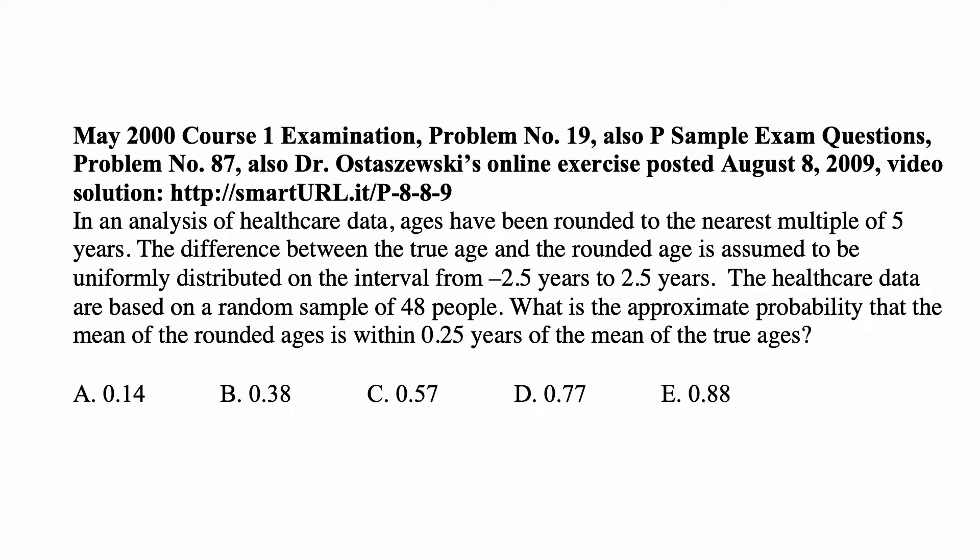Here is a problem for today for exam P on probability. In an analysis of healthcare data, ages have been rounded to the nearest multiple of five years. The difference between the true age and the rounded age is assumed to be uniformly distributed on the interval from negative 2.5 years to 2.5 years. The healthcare data are based on a random sample of 48 people. What is the approximate probability that the mean of the rounded ages is within 0.25 years of the mean of the true ages?